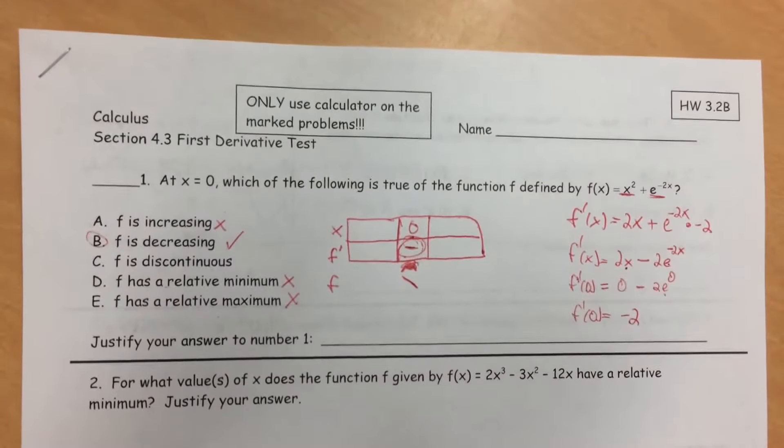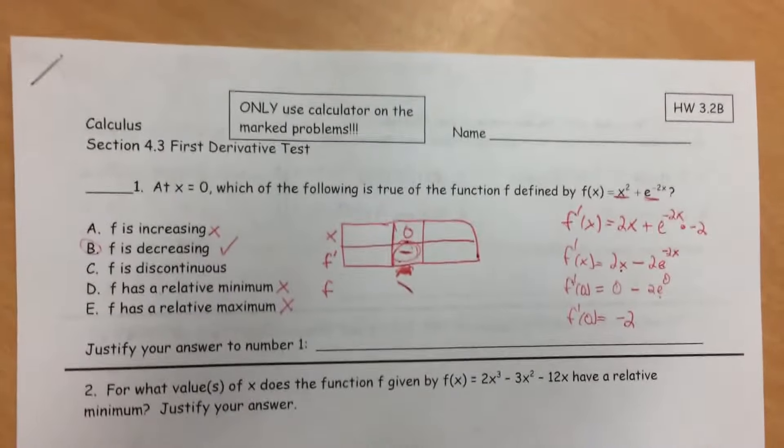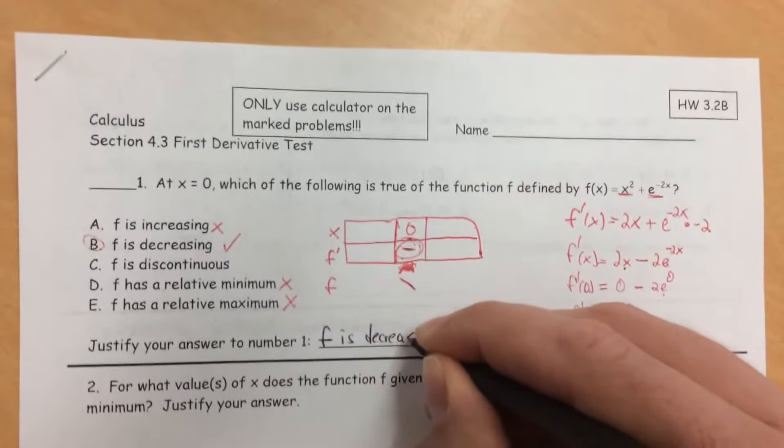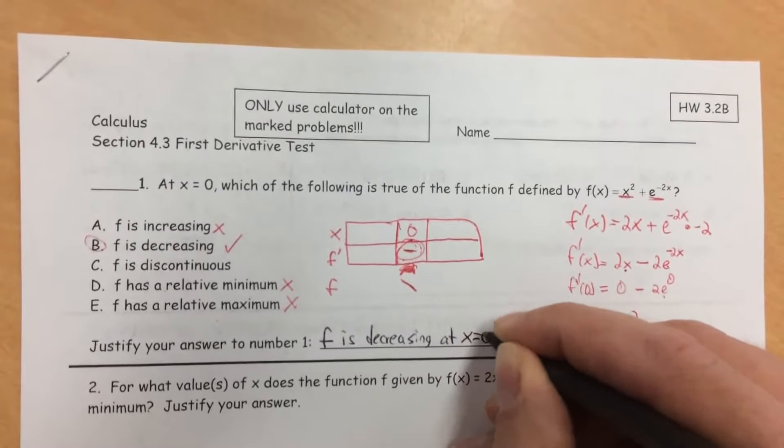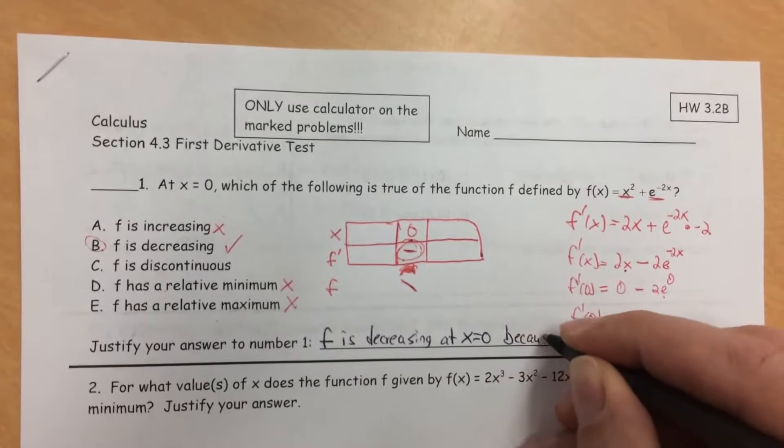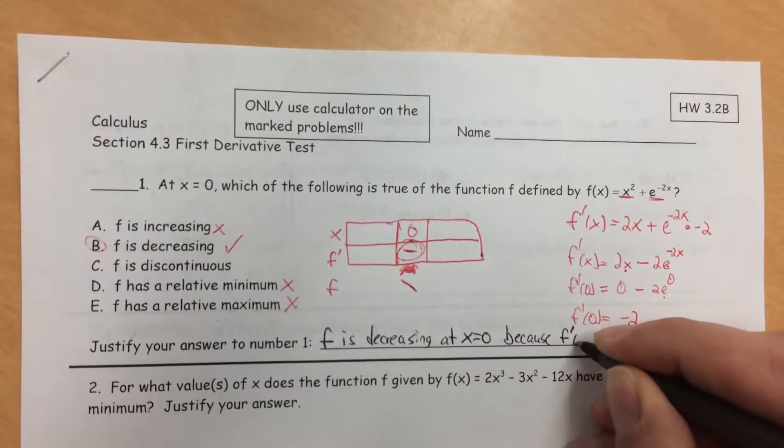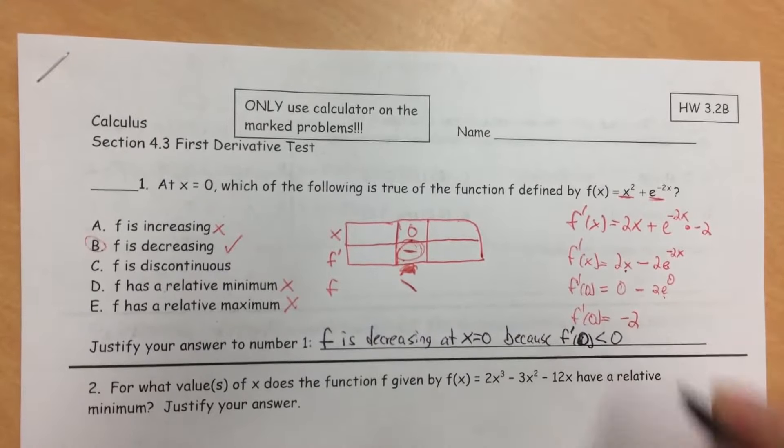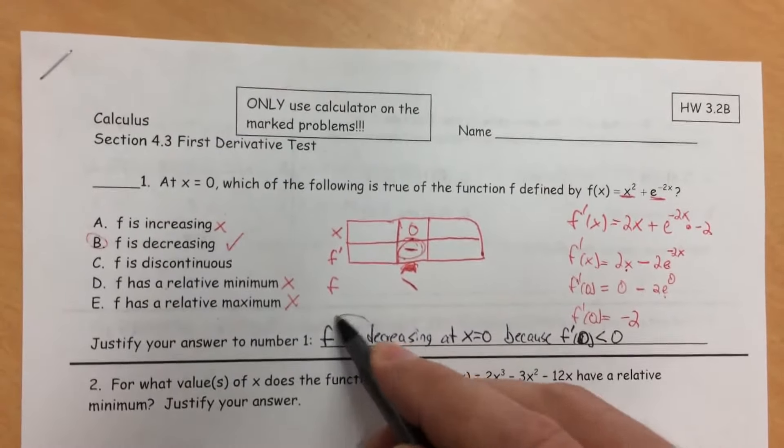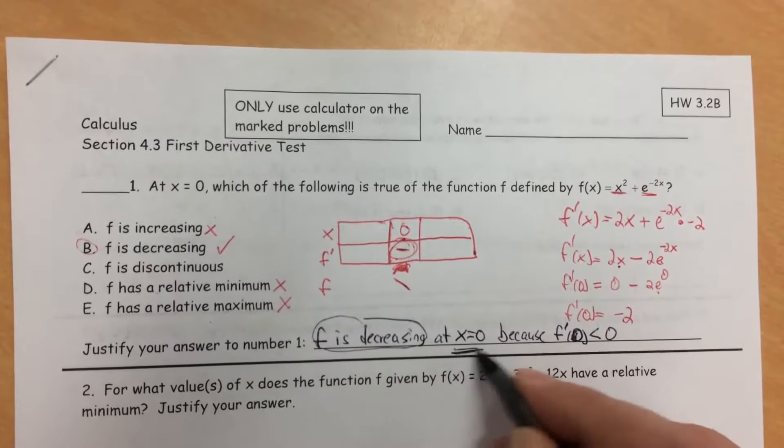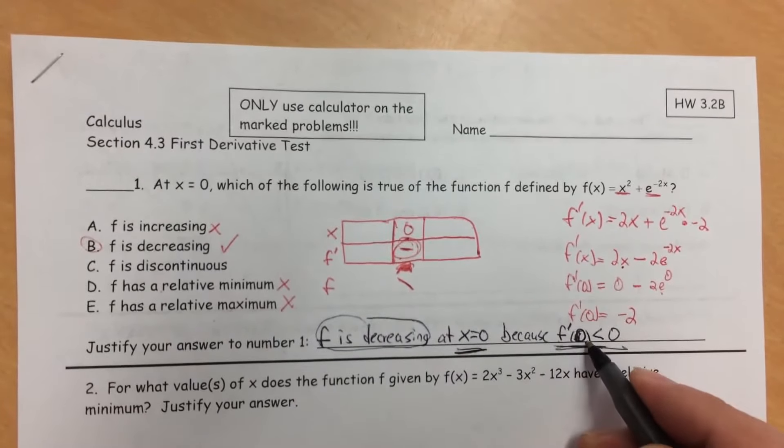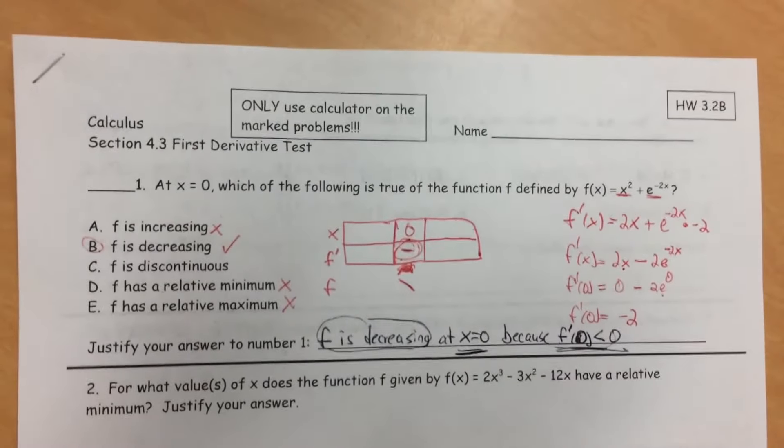So f is decreasing, and our justification, the sentence we need to use when we're writing this on the AP exam, is f is decreasing at x equals 0 because f'(0) is less than 0. So we answered the question, f is decreasing, where it's decreasing, and we said because the derivative of f at 0 is less than 0 or is negative. You could also write f'(0) is negative.